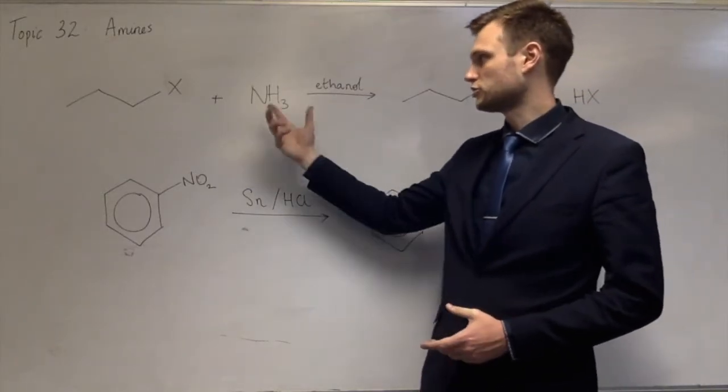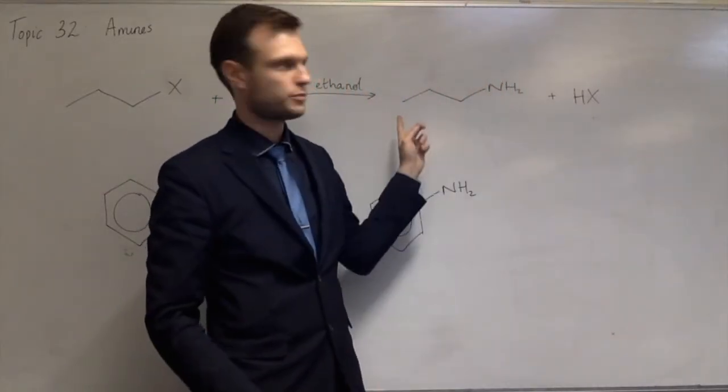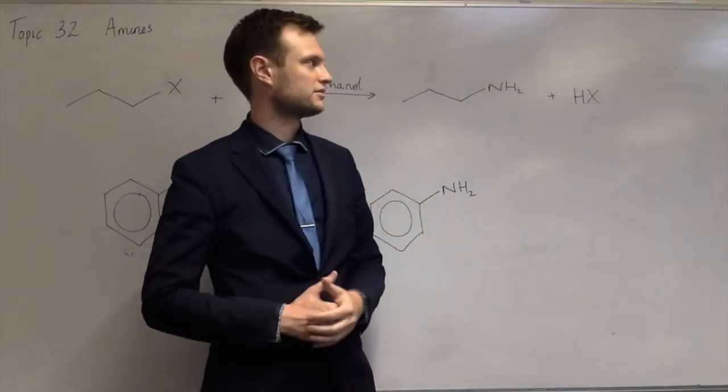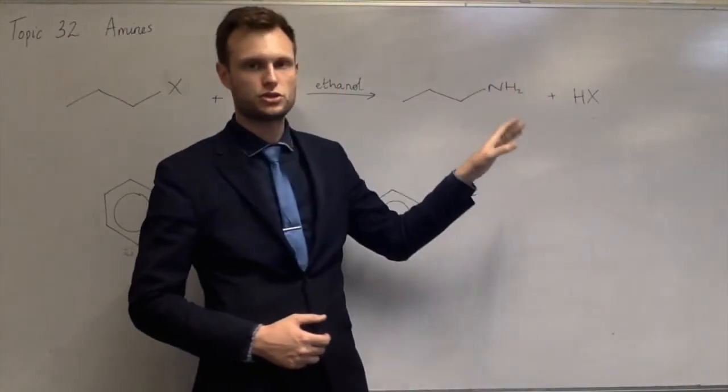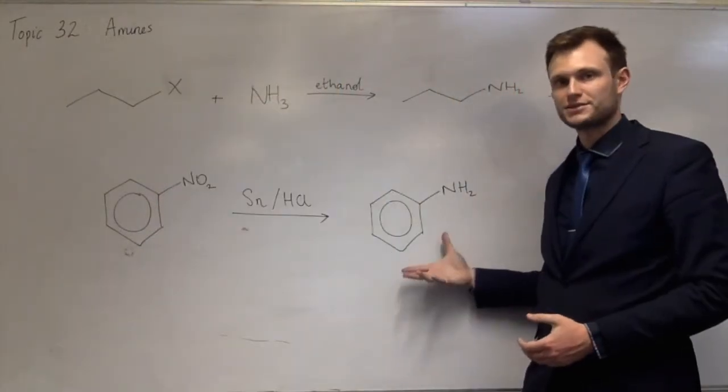That would substitute the NH2 for the X, leaving you with NH2, so this would be propylamine, and HX. Now HX is an acid, so I'd assume that this would protonate the NH2, making NH3+X-. And to make an aromatic amine,